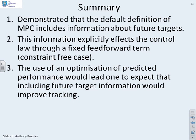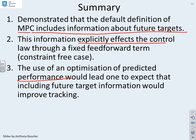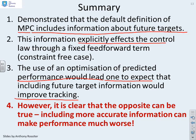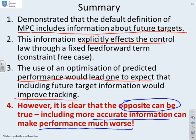So what's the summary? We've demonstrated that the default definition of MPC includes information about future targets, and this information explicitly affects the control law through a fixed feedforward term. The use of optimization of predictive performance would lead you to expect that including future target information would improve tracking. But what did we notice? It's clear that in fact the opposite can be true. If you include more accurate information, you can actually make the performance worse. That's a really important insight - just because I can use information doesn't mean I should. First I need to be able to use the information wisely.